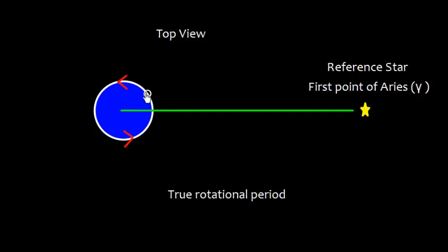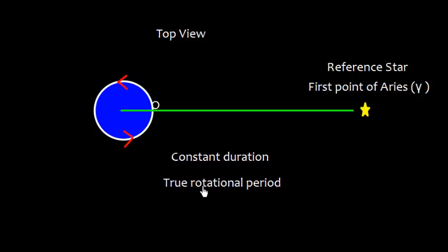Suppose earth is rotating this way, west to east rotation, and this is the point over here, and the earth rotates like this and again it comes back in the same line with this First Point of Aries. So this period naturally is of constant duration and it of course is the true rotational period. But the value is not 24 hours. It is 23 hours 56 minutes and 0.41 seconds.